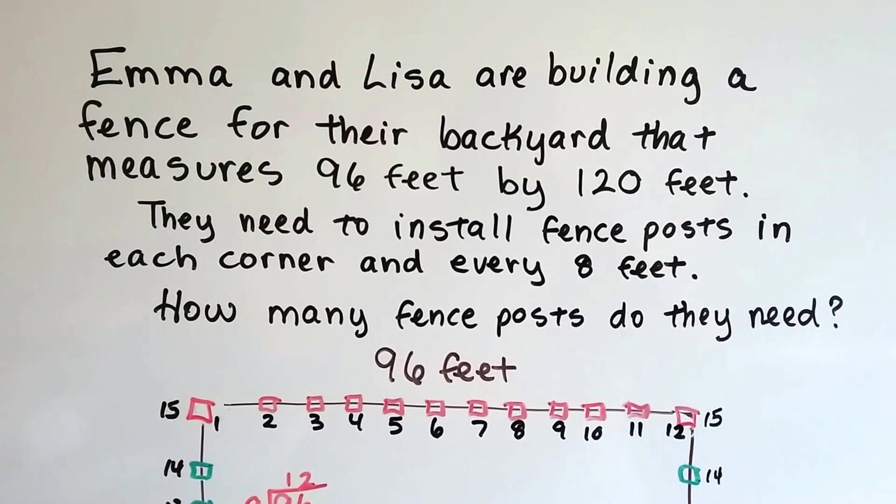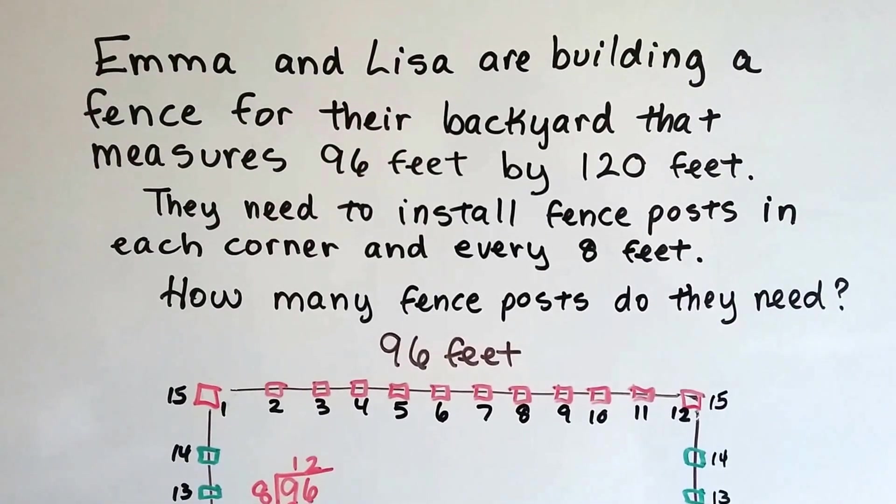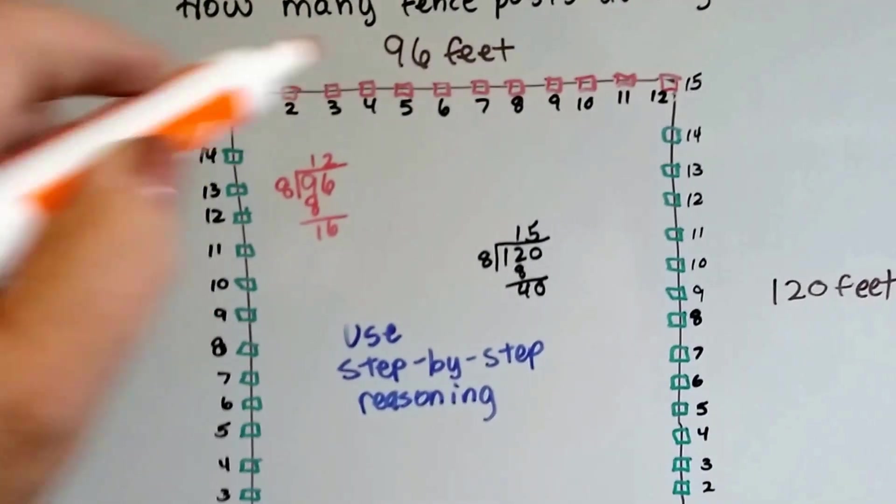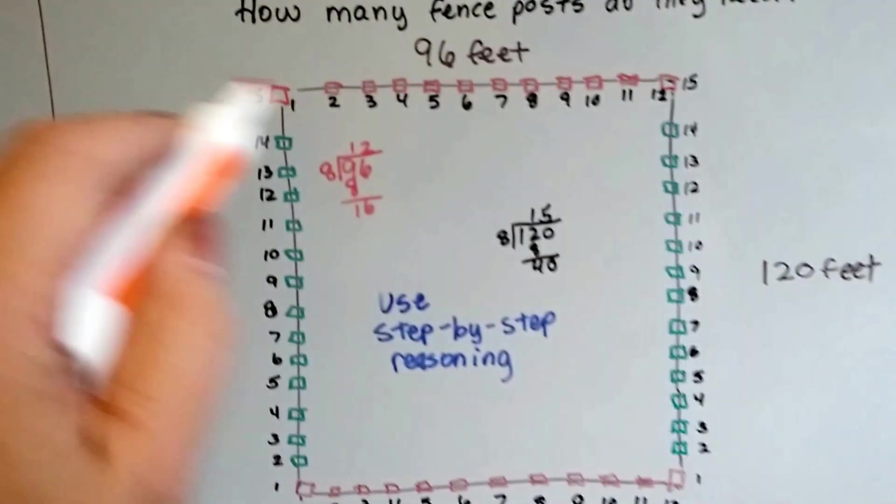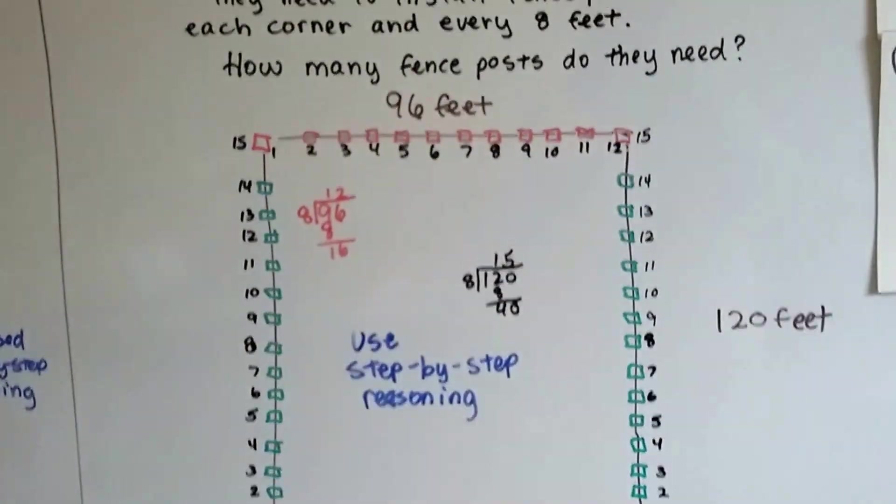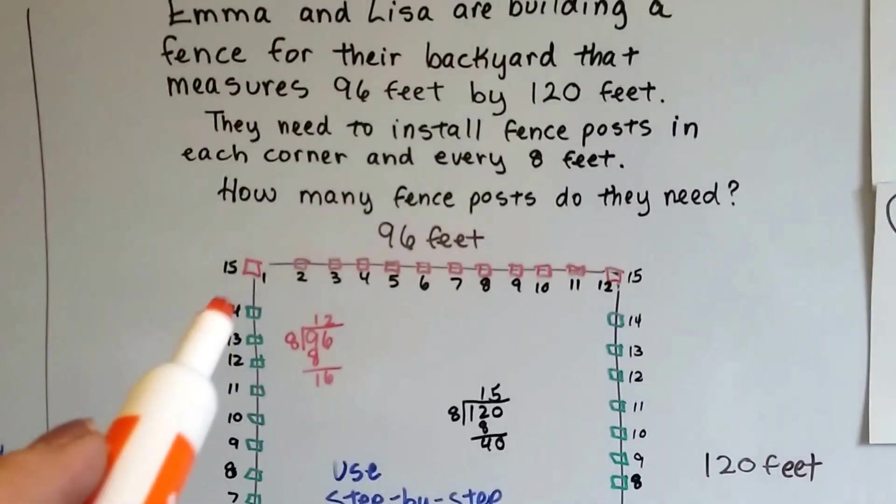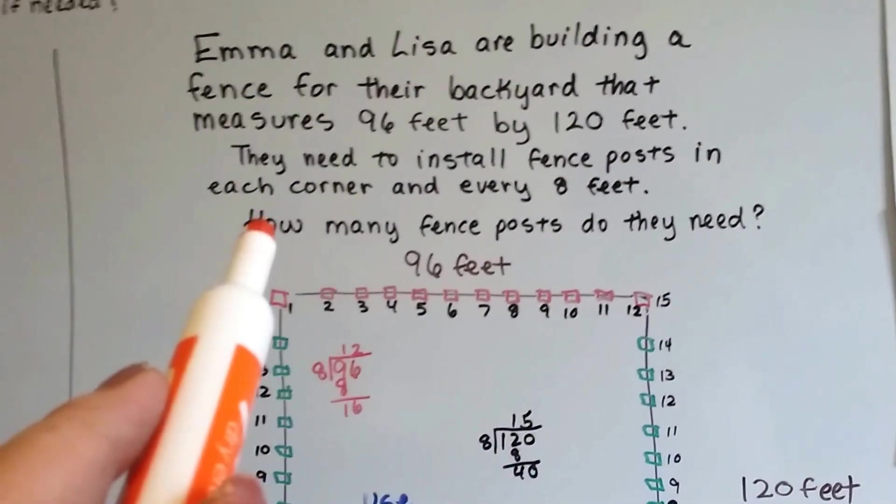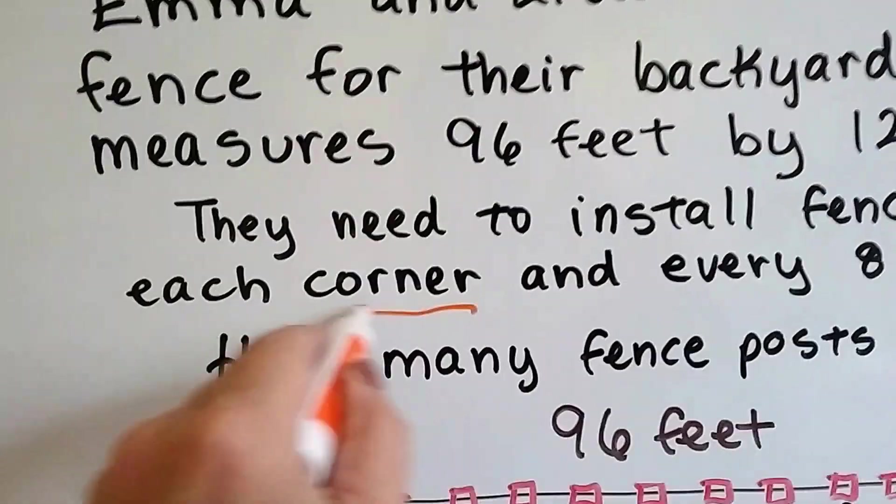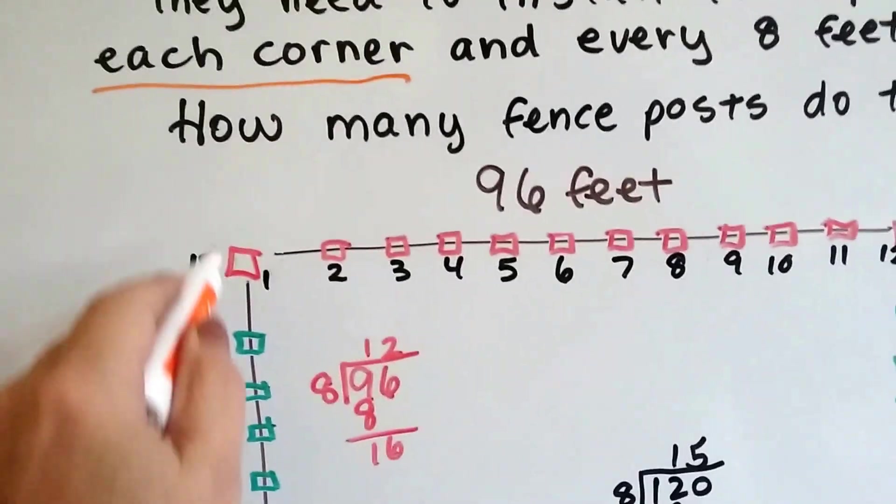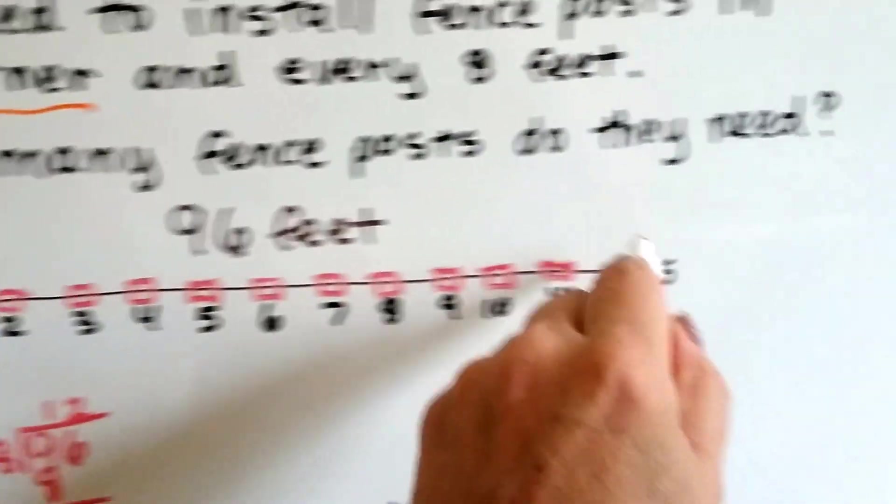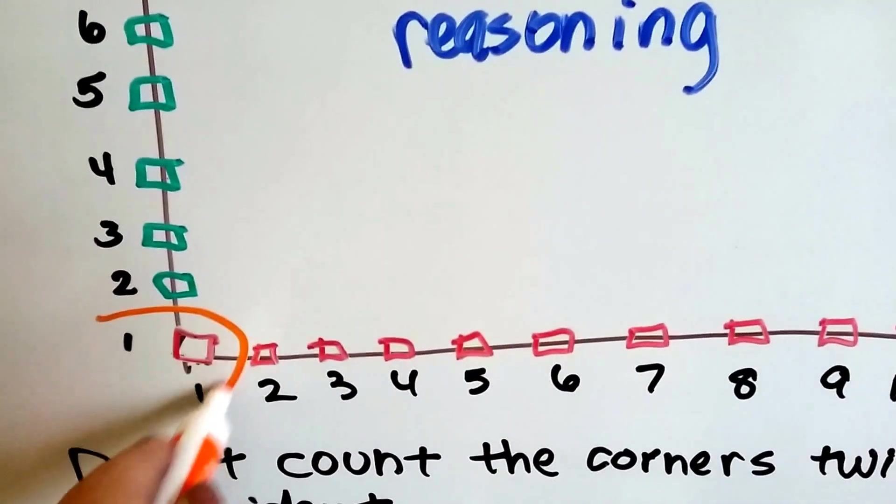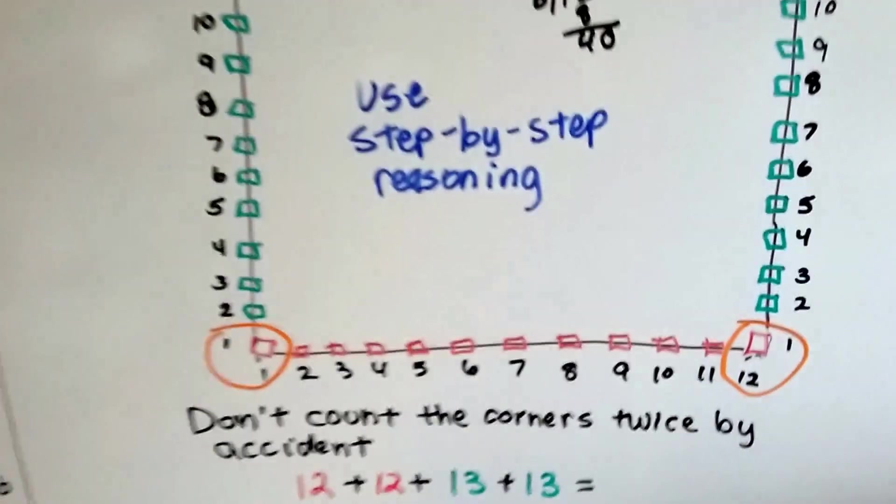They have to figure out how many they need to buy before going to the lumber yard. So, what we do is we make a big square and we put ninety-six feet on one side and a hundred and twenty feet on the other. And we knew that we had to put one in each corner. It says they need to install a fence post in each corner. So, I did that first. So, I put this one here, and this one here, and I put this one down here, and I put this one down here.